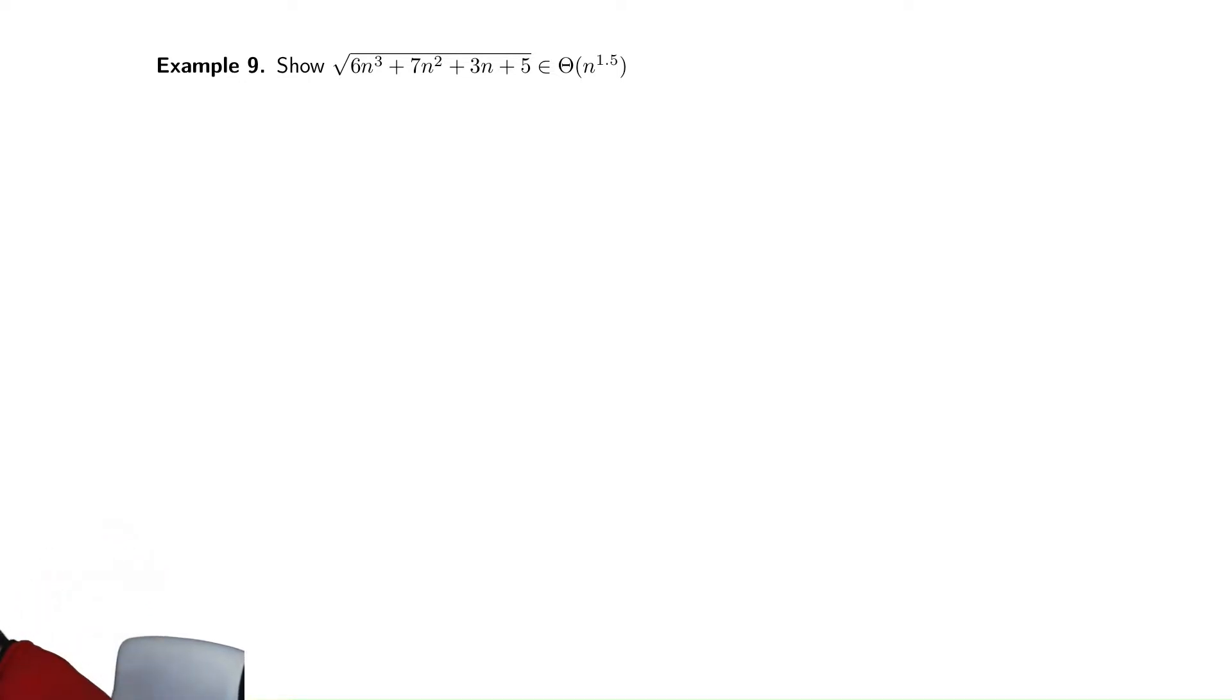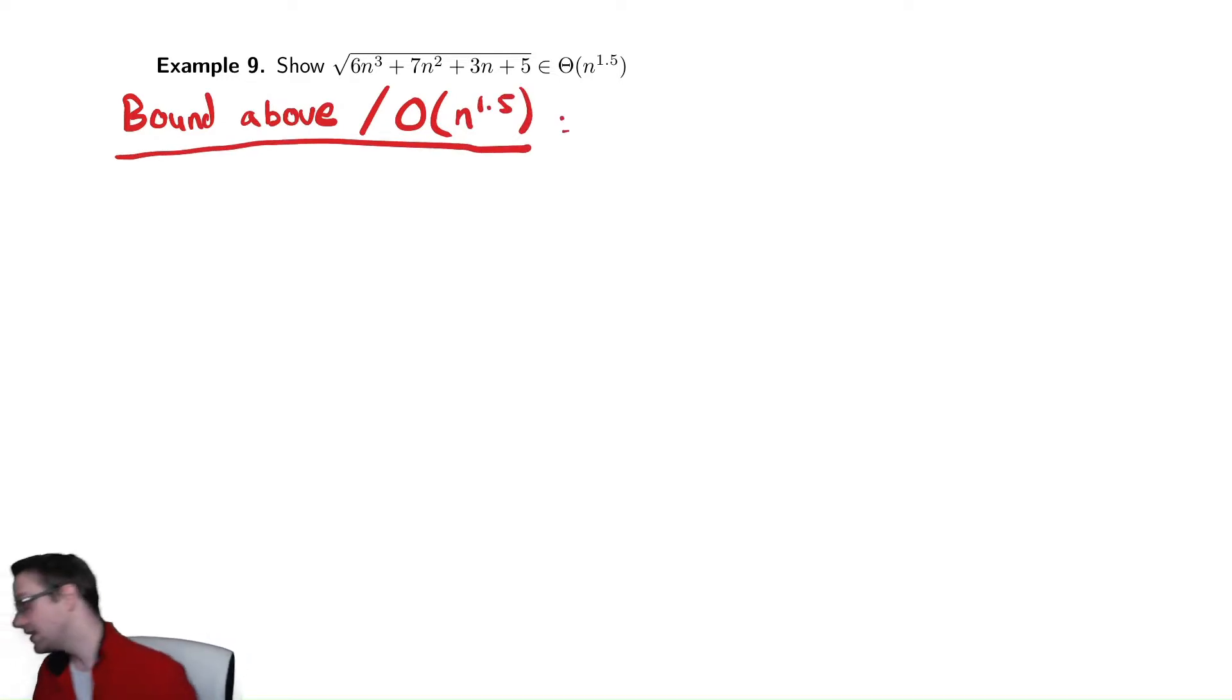So we want to bound above, or you might write just something like O of n to the 1.5. We're trying to show that our function is in that set. So we are now just like our previous examples. We take the given function, radical 6n cubed plus 7n squared plus 3n plus 5 is less than or equal to...